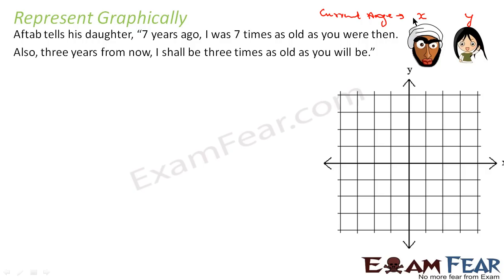Let Aftab's current age be x and his daughter's current age be y. Please note, I am talking about the current age. Current age of Aftab is x and current age of daughter is y. Now, seven years ago, Aftab must be x minus 7, and his daughter must be y minus 7, because the current age is x.